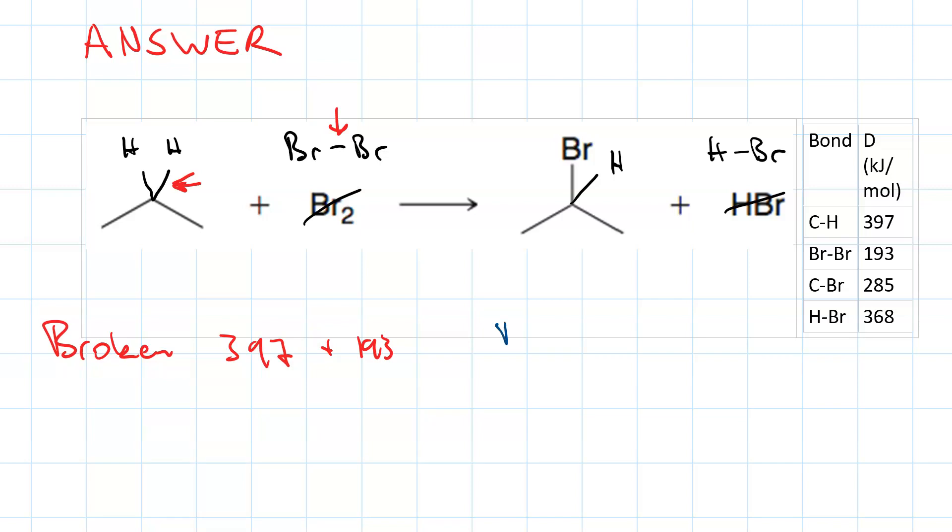What's formed? This C-Br bond and this H-Br bond, 285 plus 368. Which means ΔH approximately equals 397 plus 193 minus 285 minus 368.